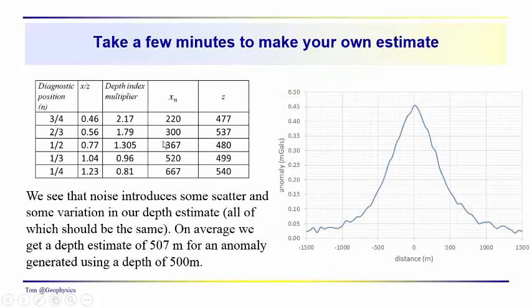So here I've just put a table together. We've got the depth index multipliers, and then our x three quarters, x two thirds, x one half, and so on are listed here. Remember, we're dealing with a noisy data set now. So these z's are not all the same.